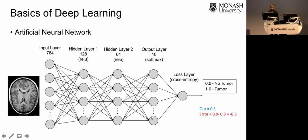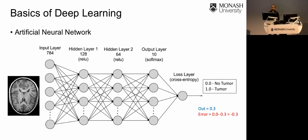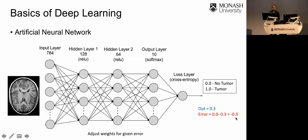During training, you vectorize the image, provide it to the network, and get an output — for example 0.3. Since the correct label is 0 (no tumor), the error is 0.3. You then back-propagate this error to adjust the connection weights, which are the learnable parameters. Intuitively, you want to change the weights so that the error goes to zero. By minimizing the error through this process, the network learns to predict correctly, so that for a new image it can accurately predict whether it contains a tumor or not.